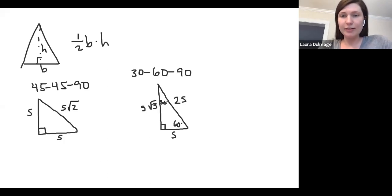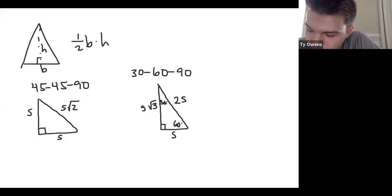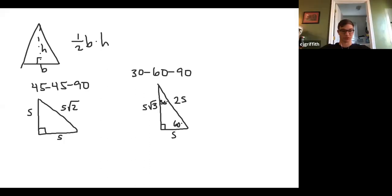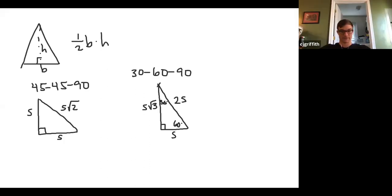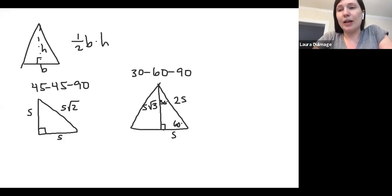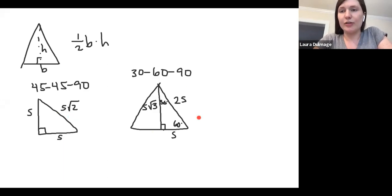Does anyone remember this stuff from geometry? If we were to extend a 30-60-90, we'd create an equilateral triangle. We're going to be looking at some of these things today. You can always use the Pythagorean theorem — that's what works here for the 30-60-90.